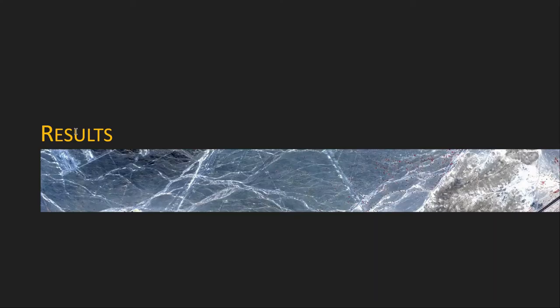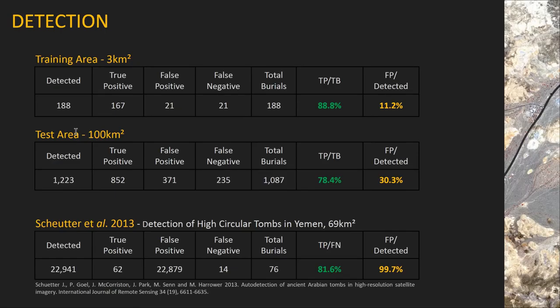The results — detection. In the training area of 3 square kilometers, I detected 188 objects. Of them, 167 were true positives, equal to almost 90 percent of the total burial monuments verified in the field. I had a false positive rate of 11 percent. In the test area of 100 square kilometers, I had 1,223 detections. Of them, 852 were true positives, equal to almost 80 percent of the total burial monuments identified in the area. The false positive rate was over 30 percent. The detection covered both isolated cairns and clusters.